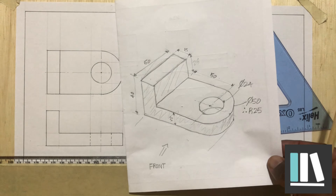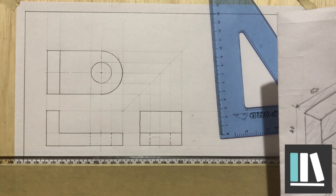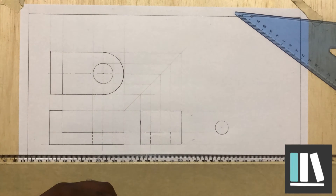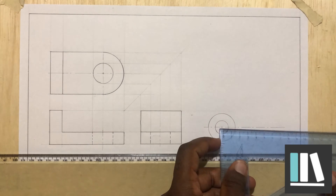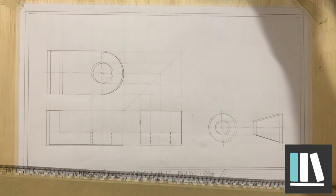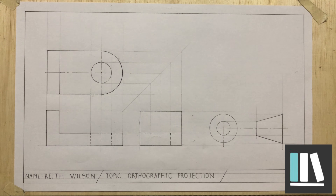You can now go ahead and add your dimensions to your drawings. Let me add my orthographic symbol very quickly. That is my orthographic symbol. You can go ahead and apply the dimensions to the drawing. I hope this lesson was informative, and I hope you guys like, share, and subscribe for more content. Have a good day.